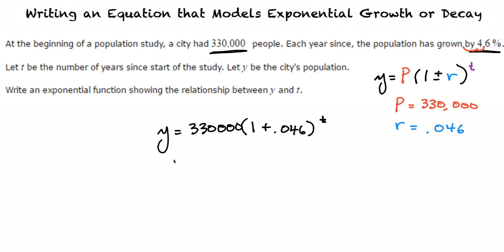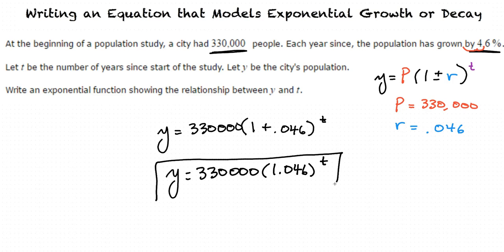Then we can simplify this to Y equals 330,000 times 1.046 to the T. And this is our final answer.